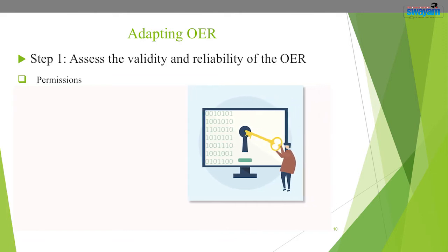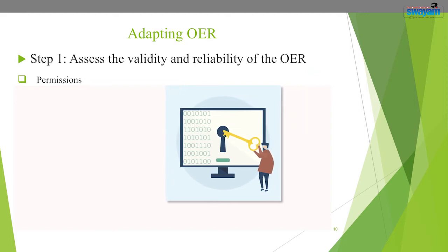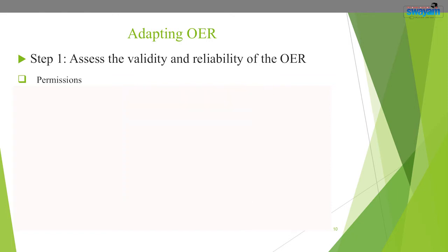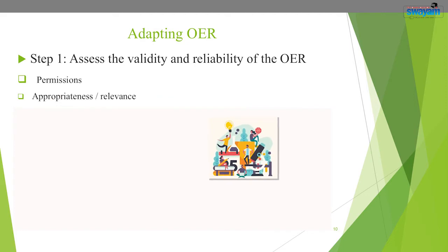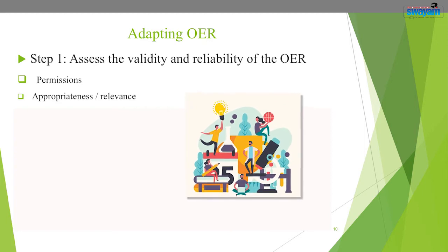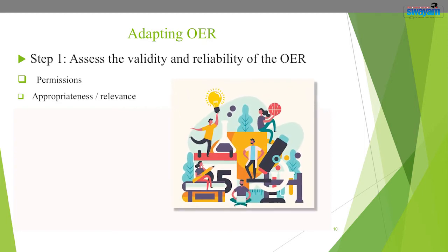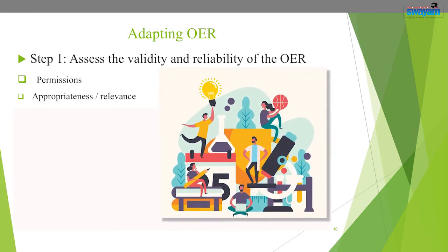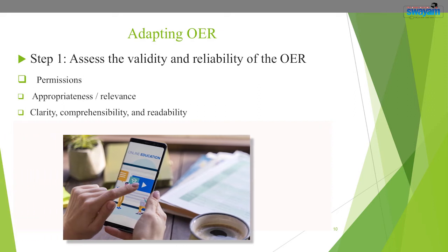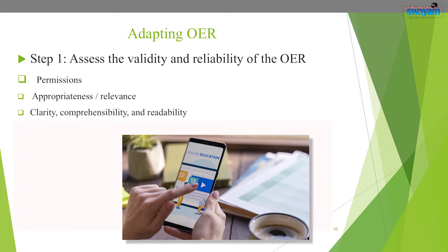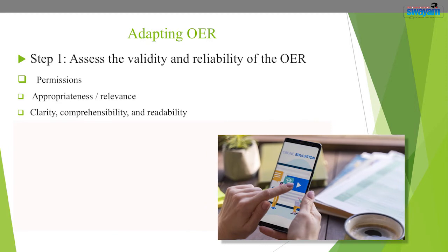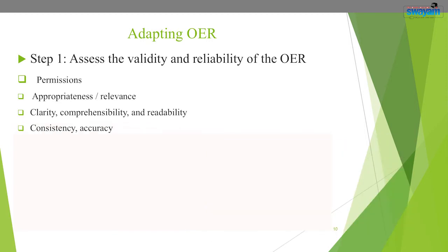The OER may be licensed under one of the six Creative Commons licenses — find the best practices for attributing Creative Commons materials. The second criterion is appropriateness or relevance — is the content appropriate to your audience, whether for first-year, second-year, or experienced students? Another criterion is clarity, comprehensibility, or readability — is the content clear, well organized, with logical sequencing and flow?